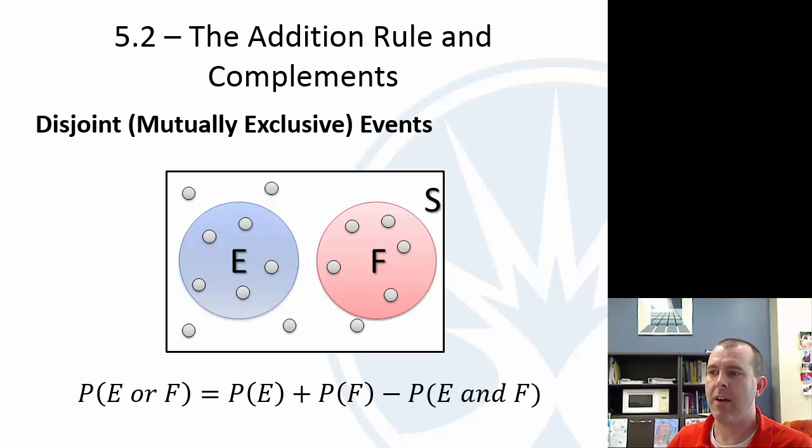So I would just memorize, when you're studying this, just memorize the general addition rule, which hopefully is pretty logical to you looking at it that you just take one probability and add the other probability and subtract where they overlap. But that is a rule you need to be comfortable with.